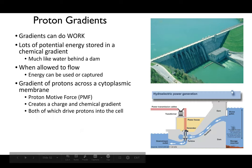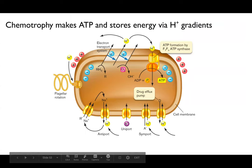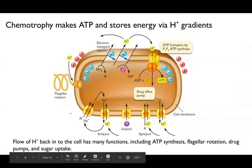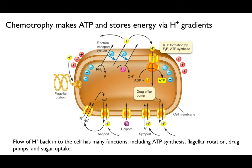Proton motive force creates a charge and chemical gradient that drives protons into the cell. Chemotrophs make ATP by transporting hydrogen across the membrane and cell wall to build a gradient, then allow that gradient to flow back through ATP synthase. ATP synthase spins like a hydroelectric dam, generating energy and phosphorylating ADP into ATP. That's the most important thing to remember.